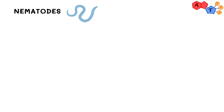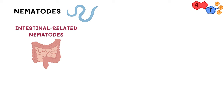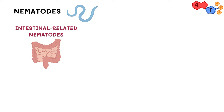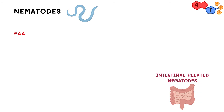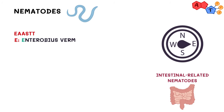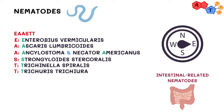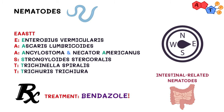We will divide nematodes into two big groups: intestinal, which mainly affects the GI tract, and tissue-related, which can affect different tissues — but tissue nematodes will be covered in another video. Their names are a mouthful, so practice saying them as we go along. Let's remember this mnemonic for intestinal nematodes: EAST. E for Enterobius vermicularis, A for Ascaris lumbricoides, the second A is for Ankylostoma and Necator americanus, S is for Strongyloides stercoralis, T is for Trichinella spiralis, and the final T is for Trichuris trichiura. Also, throughout this video, when asked about treatment, the answer is almost always a Bendazole — statistically speaking, 99% of the time you'll be correct.